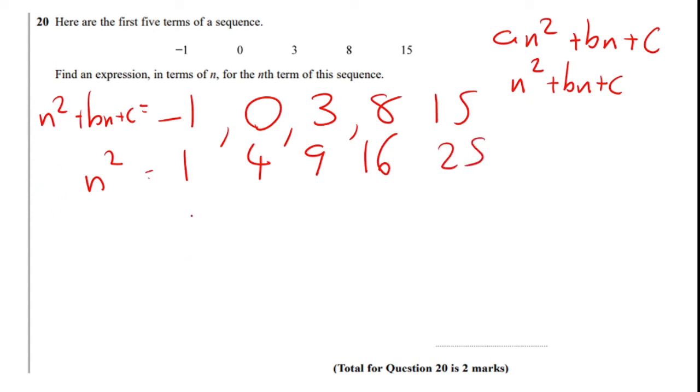Now I'm going to take the top one away from the bottom one. And if you look at it algebraically, it actually cancels out the N squared. So I've got Bn plus C, which is a linear sequence.